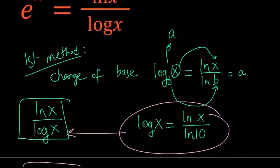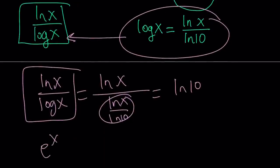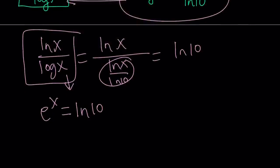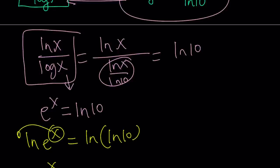So, we have now e to the power x equals this, which is ln 10. And this equation is very easy to solve. Just ln both sides. We ln a lot. ln e to the x equals ln ln 10. And then, from here, x moves to the front, and x becomes ln ln 10.